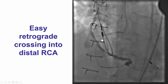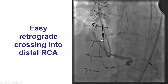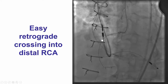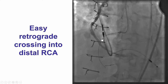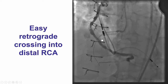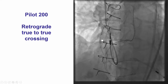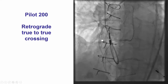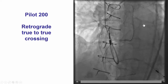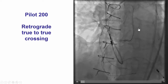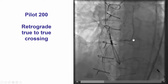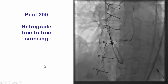We therefore converted to a retrograde approach by advancing a guidewire from the vein graft into the distal right coronary artery, and then we were easily able to cross the CTO from true to true lumen into the antegrade guide catheter.